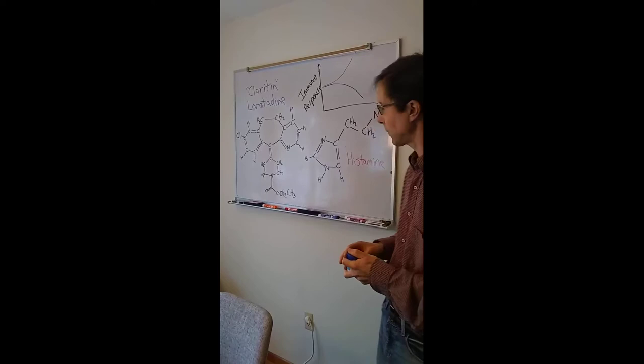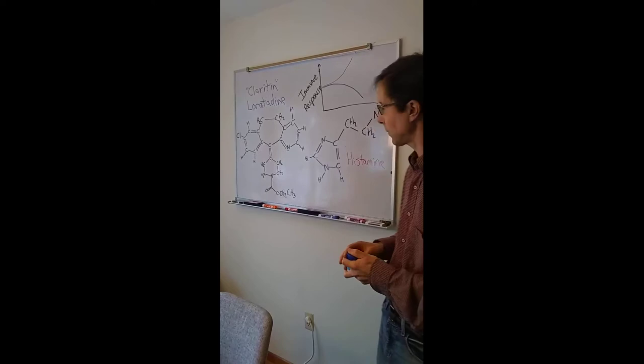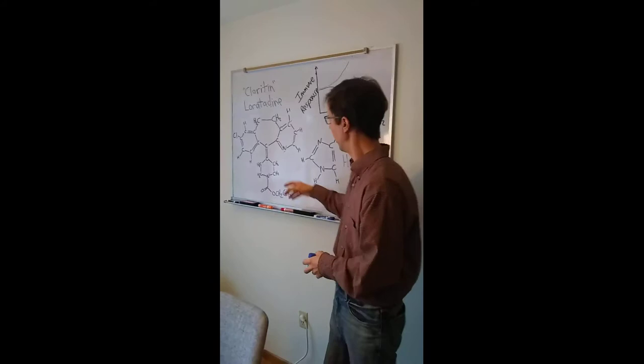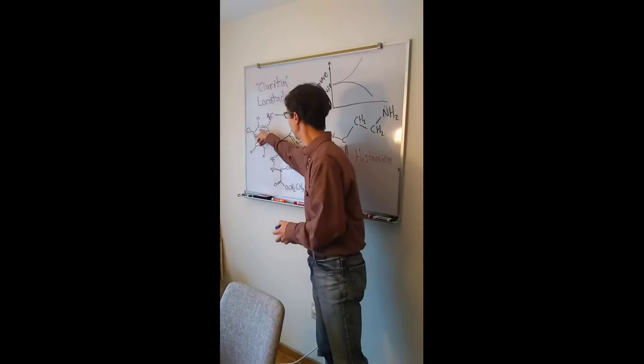So what is loratadine doing? We see the molecule here. In organic chemistry, we're going to talk a lot about the structure of molecules like this and how we'll make molecules like this. We'll learn about these six-membered rings and the shapes they take. We'll learn reactions of these kinds of benzene rings with these double bonds, how to put the chlorine onto the molecule.